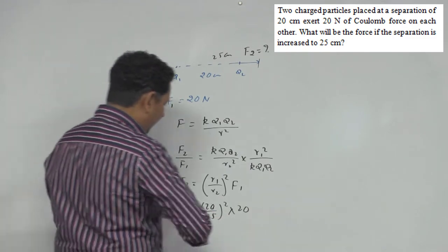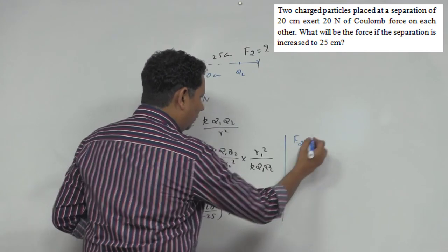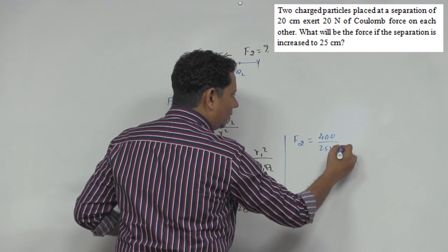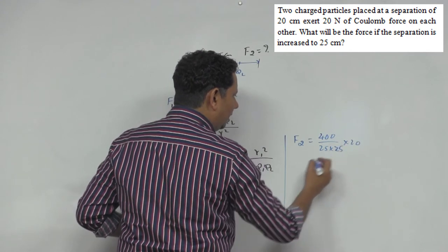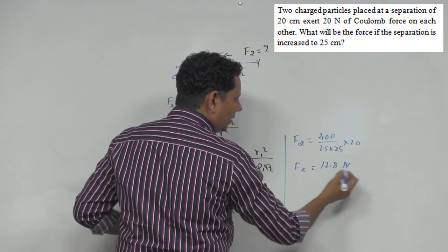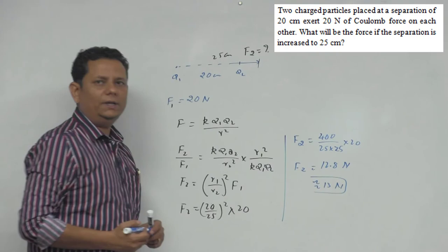When we calculate this, the force value will come. F2 equals 20 squared, that is 400 divided by 25 times 25 multiplied by 20. When we calculate this, 12.8 newtons is the value, which can be said approximately 13 newtons would be the right answer.